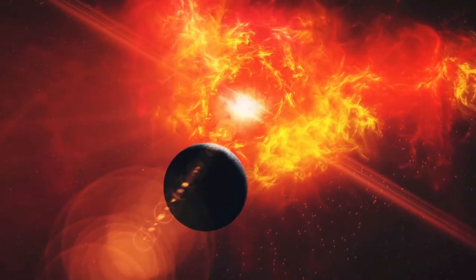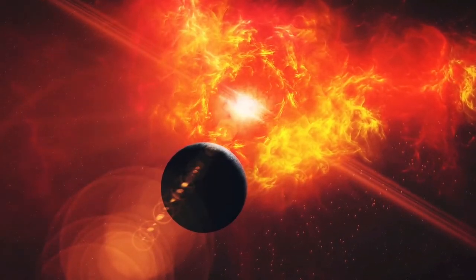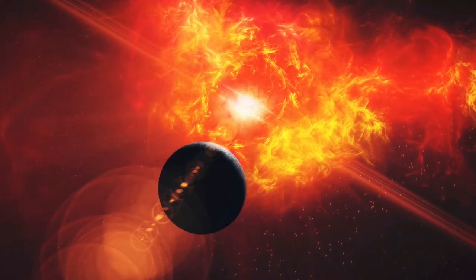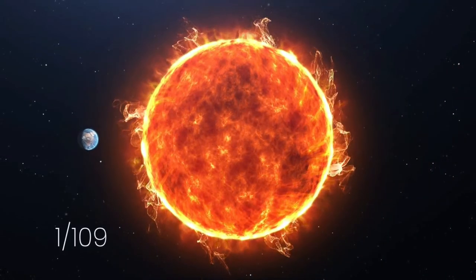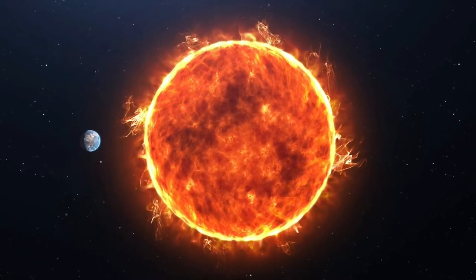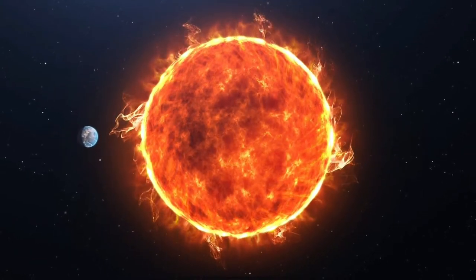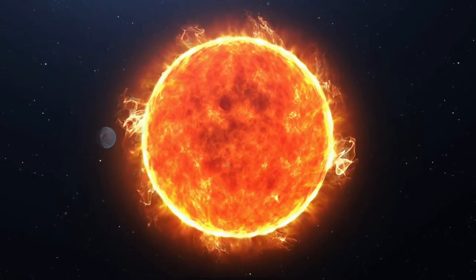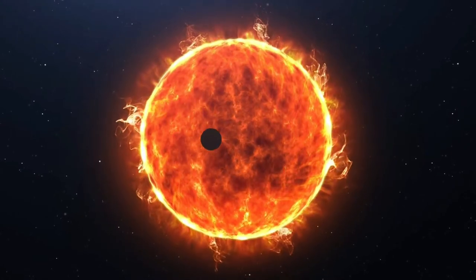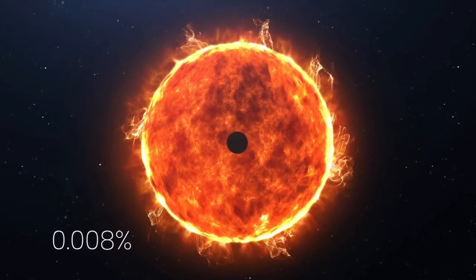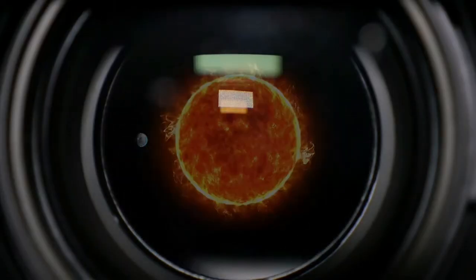However, detecting the transit of an extrasolar planet is very challenging. For example, the diameter of Earth is only one 109th of the Sun, so for an outside observer of the solar system, the passage of Earth would dim the output of the Sun by only 0.008%. Kepler's cameras had to be sensitive enough to detect this minute change in luminosity using the same method.